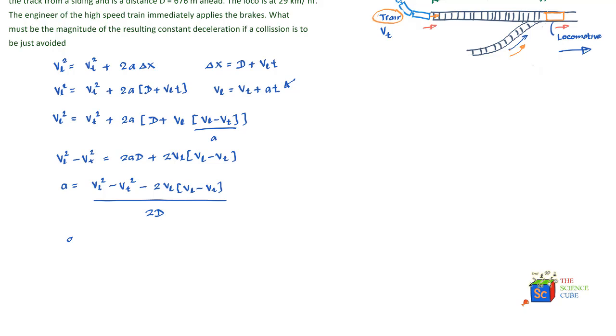If you simplify this further, it will take one or two more steps. What you'll get is a = -(vL - vT)²/(2d).